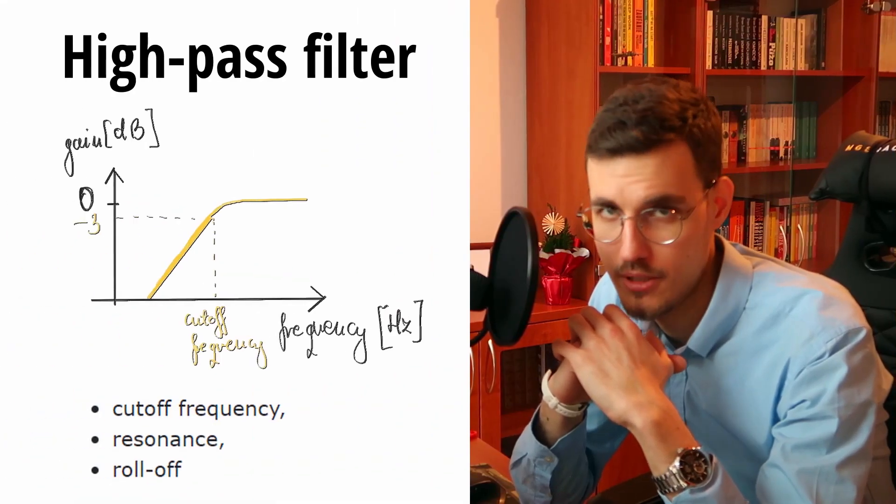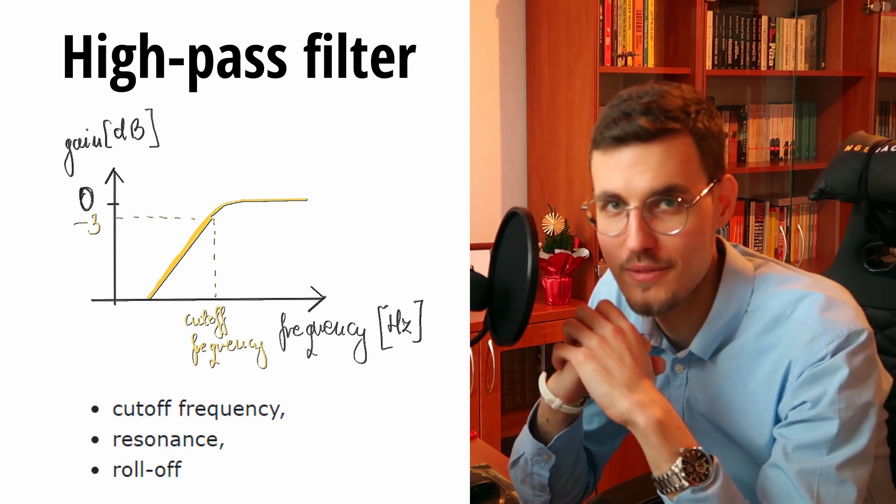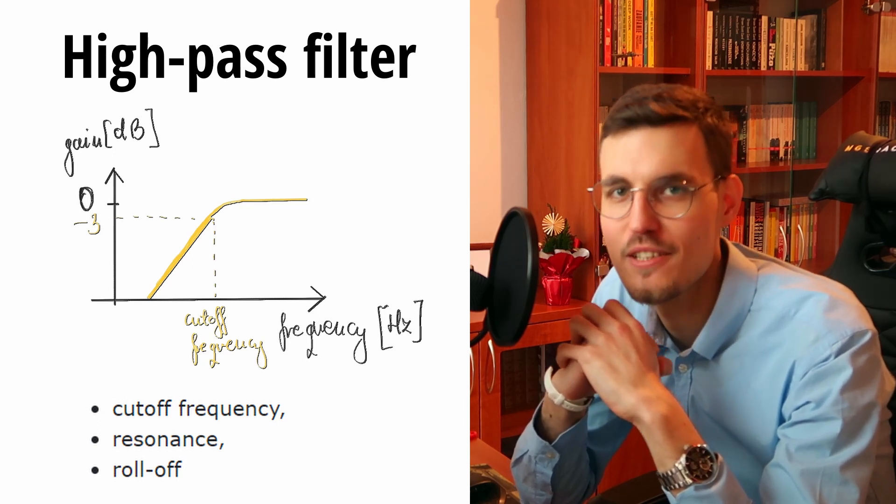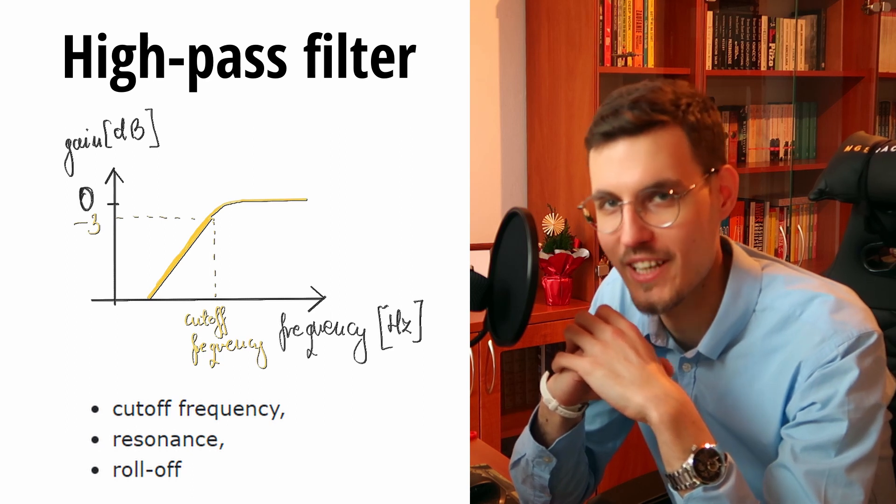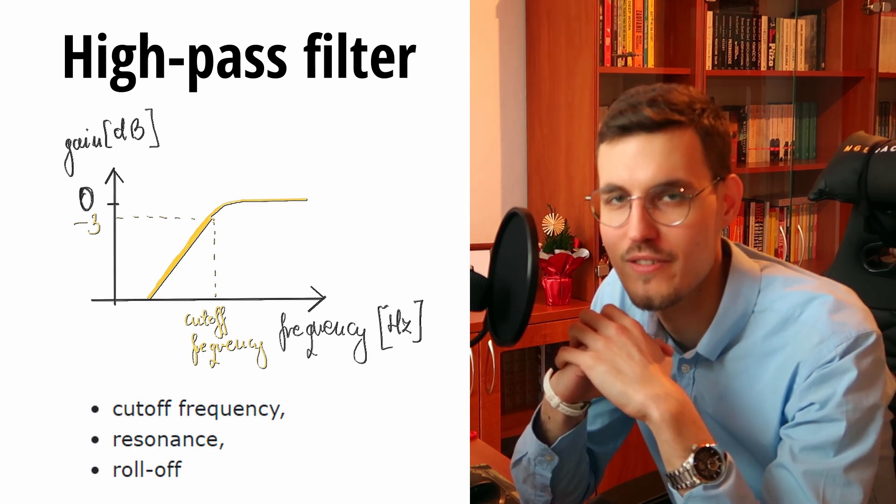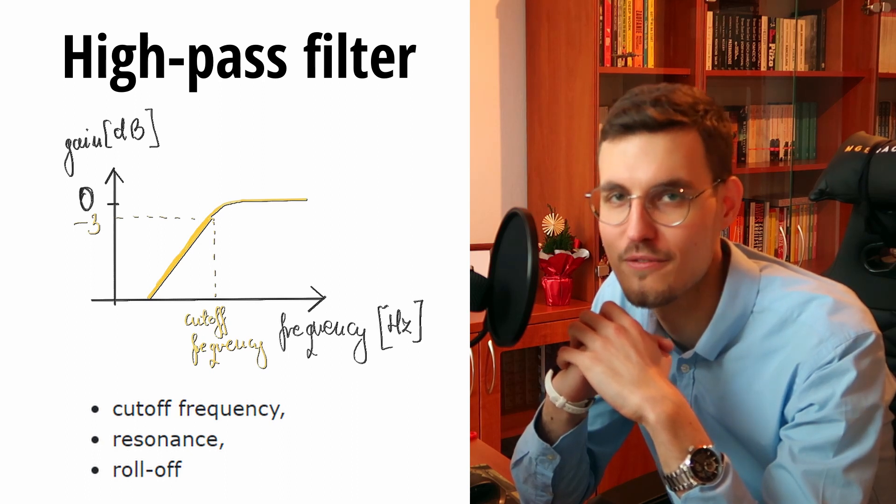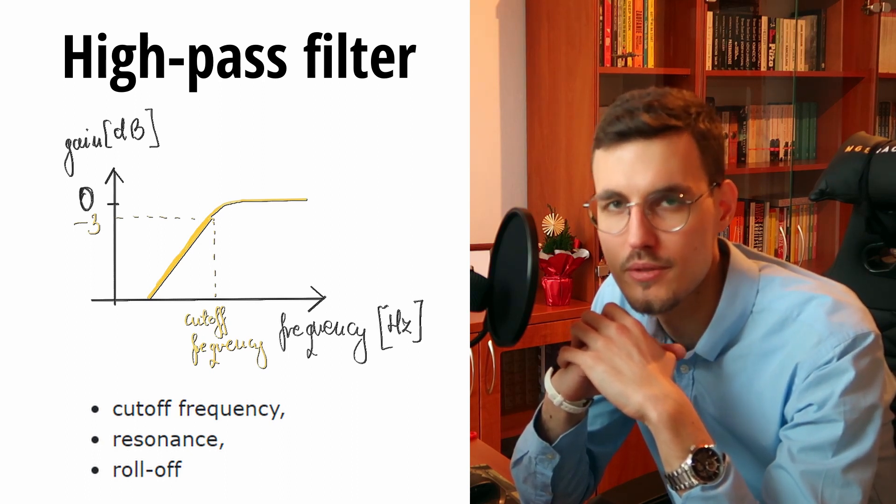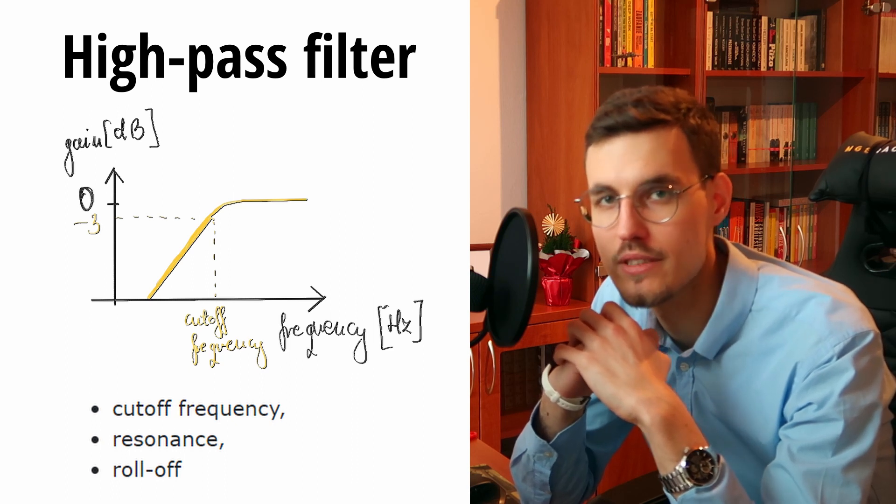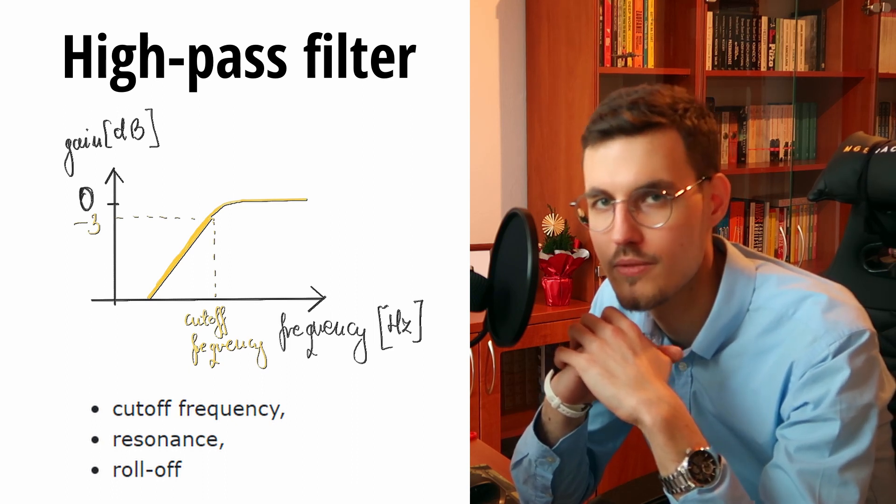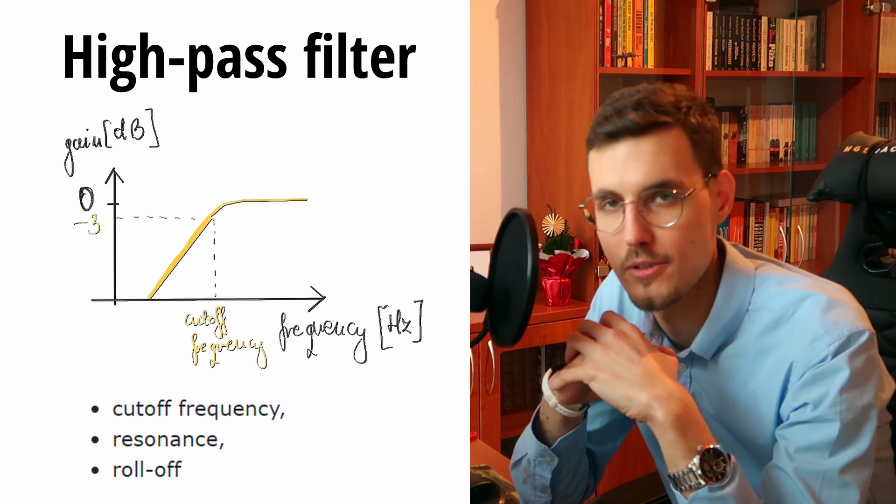The high-pass filter works exactly as the low-pass filter, except that it attenuates frequencies below the cutoff frequency, not above. It has exactly the same parameters as the low-pass filter. High-pass filters are usually used to remove undesired frequencies below 100 hertz. Here is how a high-pass filter sounds.